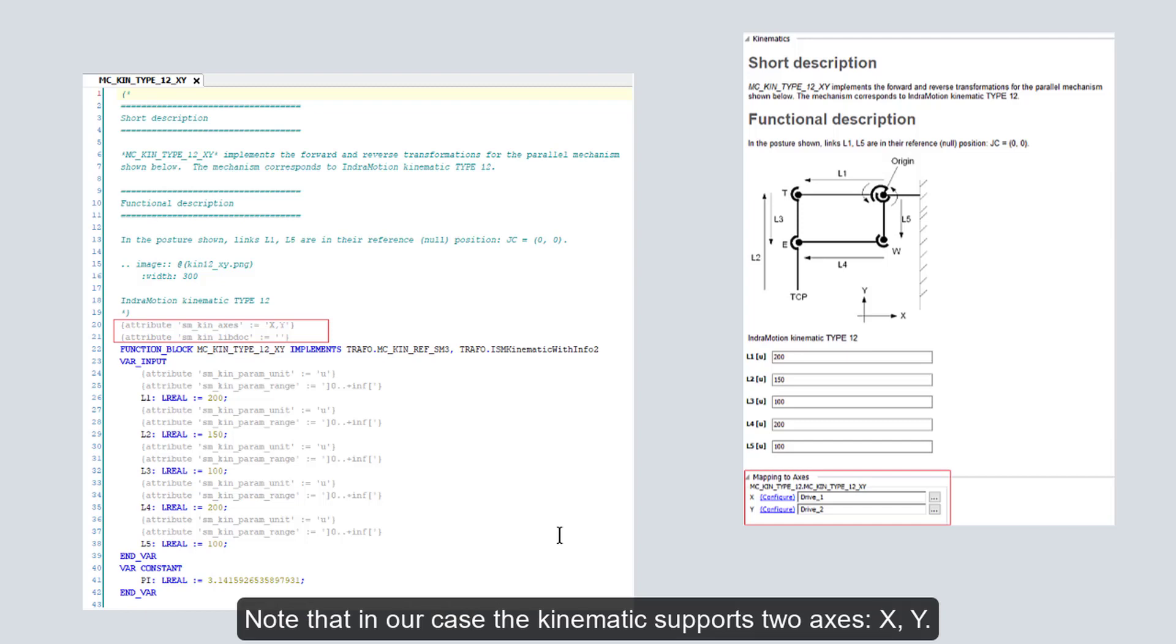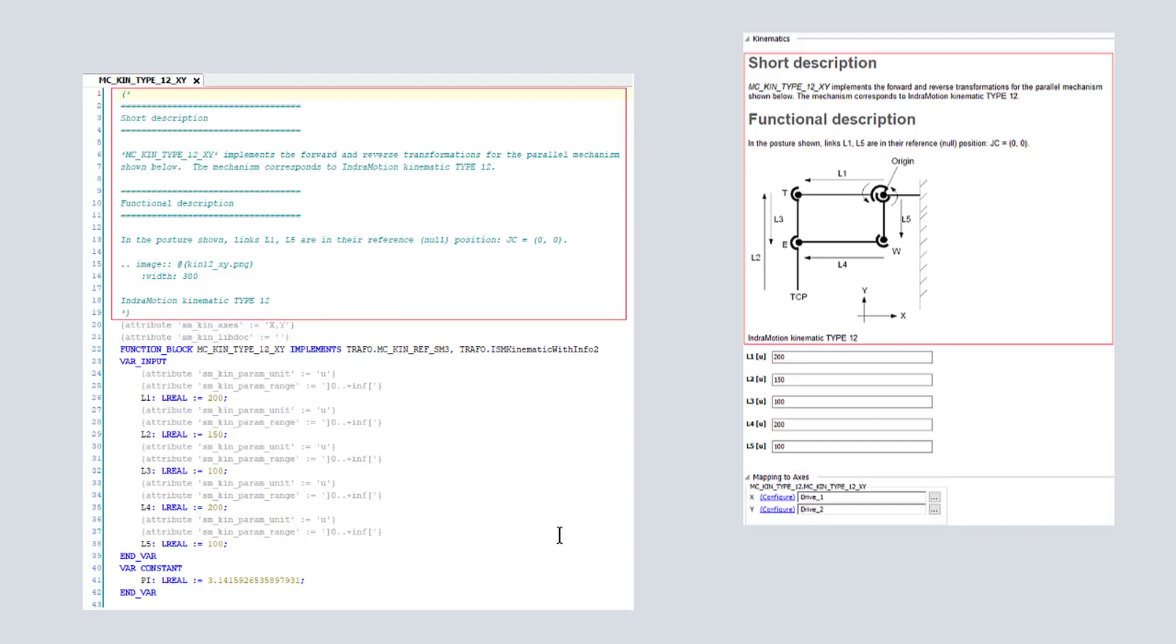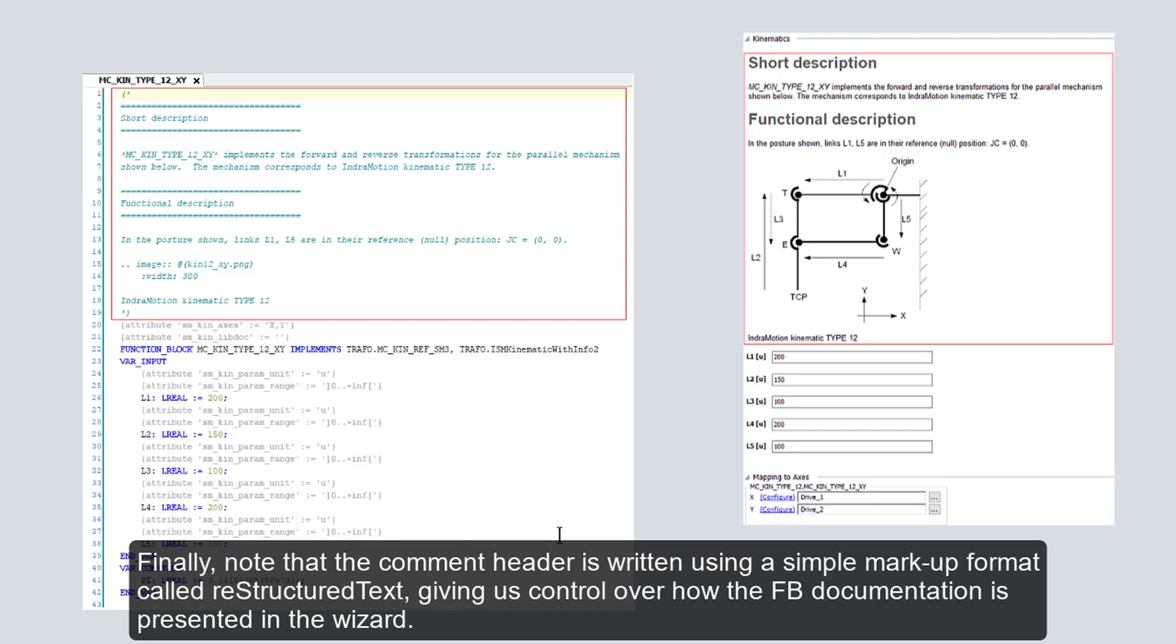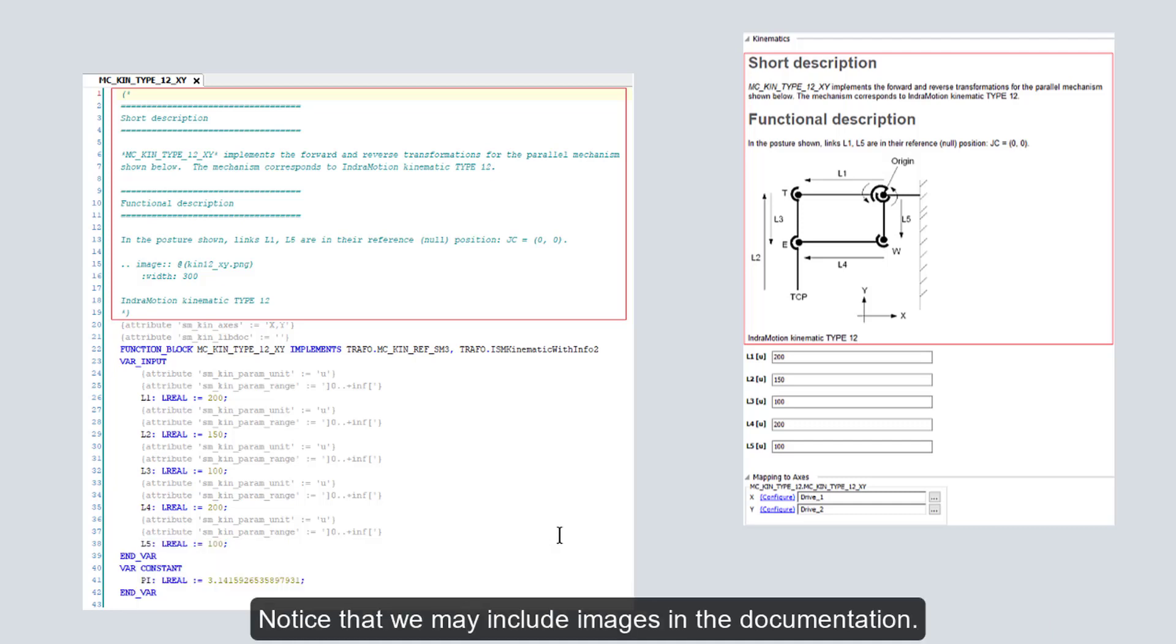Note that in our case, the kinematic supports two axes, X and Y. Finally, note that the comment header is written using a simple markup format called restructured text, giving us control over how the function block documentation is presented in the wizard. Notice that we may include images in the documentation.